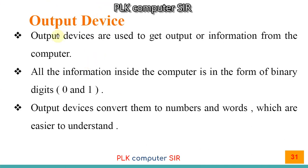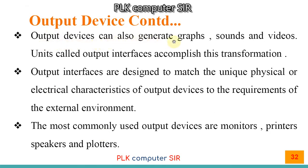Output devices are used to get output or information from the computer. All information inside the computer is in the form of binary digits 0 and 1. We cannot easily understand 0s and 1s, so output devices convert them to numbers and words which are easier for human beings to understand. Output devices can also generate graphs, sound, and video. Units called output interfaces accomplish this transformation — for sound we need a speaker, for visuals we need a monitor, for graphs or maps we need a plotter.